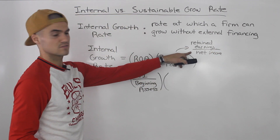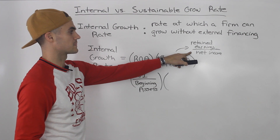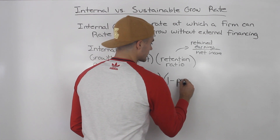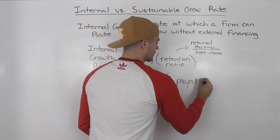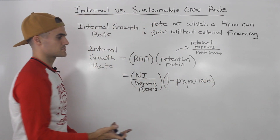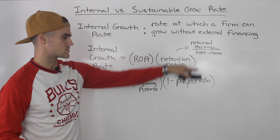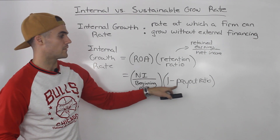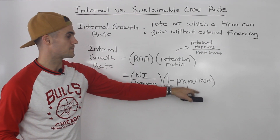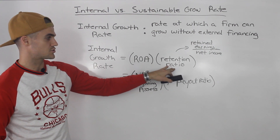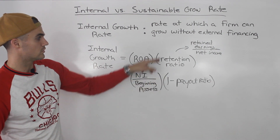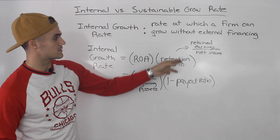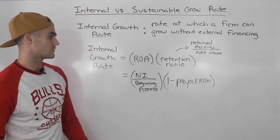Retained earnings of $35,000 divided by net income of $50,000 gives us 70%. The retention ratio can also be represented as one minus the payout ratio. Since we were given a payout ratio of 30%, one minus 0.3 = 0.7, which is the retention ratio. Sometimes the payout ratio will be given, sometimes you'll figure it out from dollar amounts — but these are the various ways to find the retention or payout ratio.